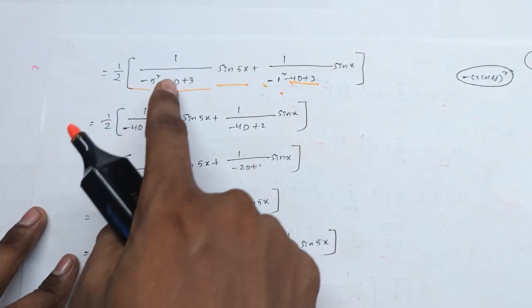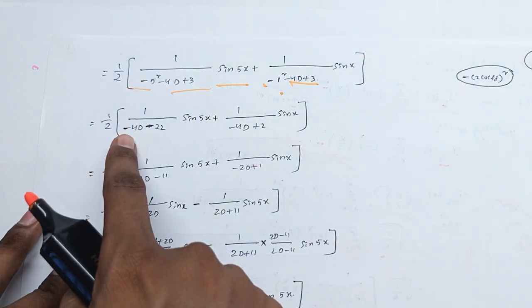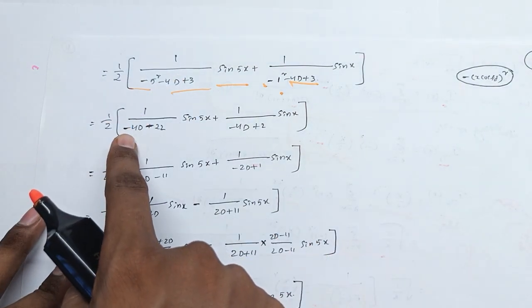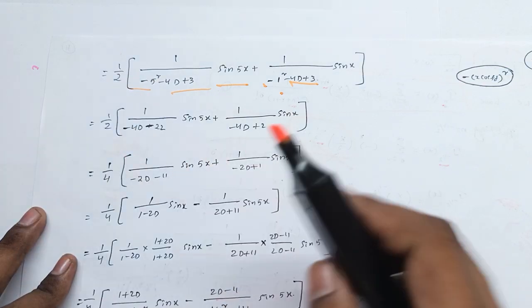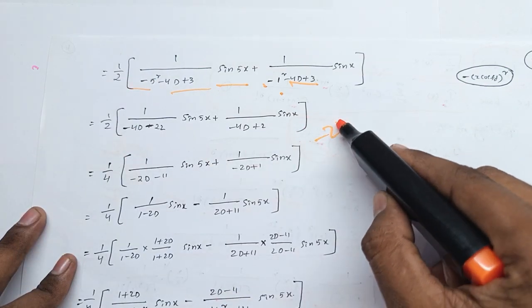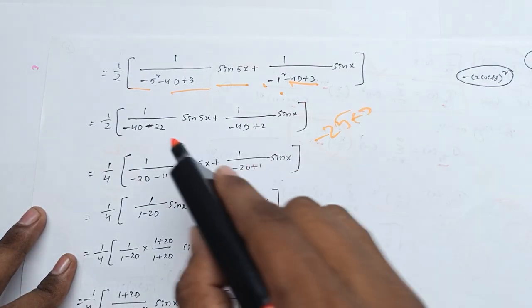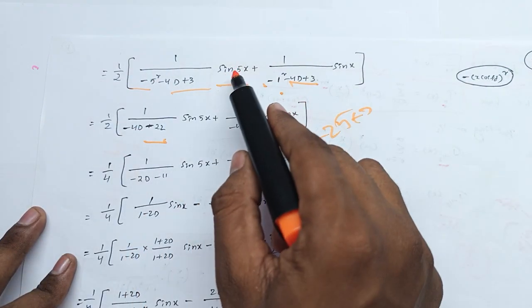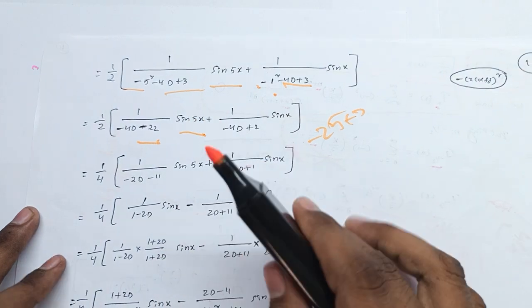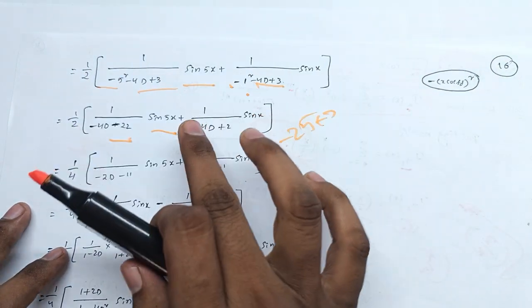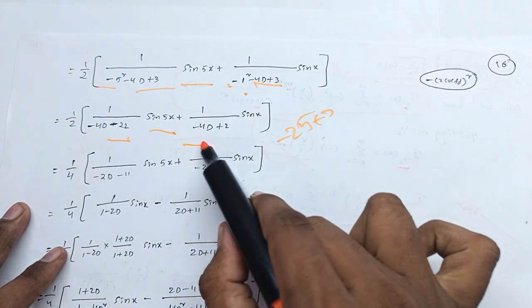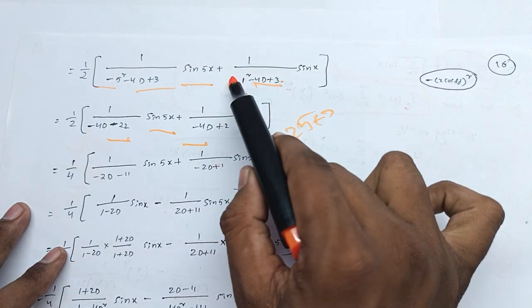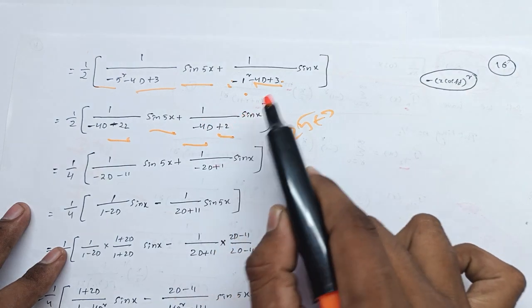We get 1 minus minus 4D. Minus 5 squared is minus 25, minus 25 plus 3 gives minus 22. So minus sin 5x over minus 22. Then 1 by minus 4D, and 3 minus 1 is minus 2.